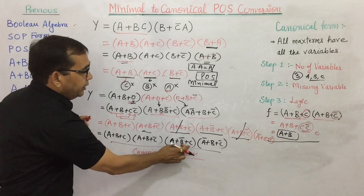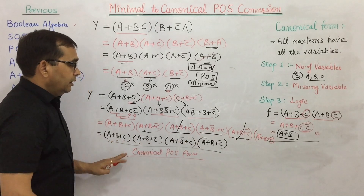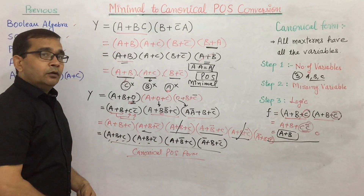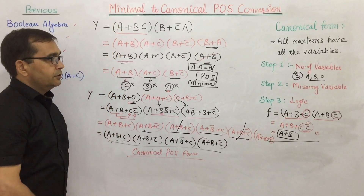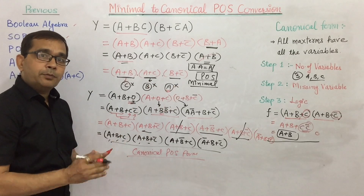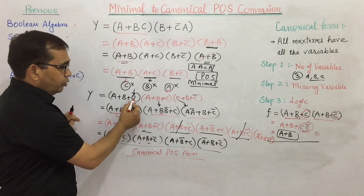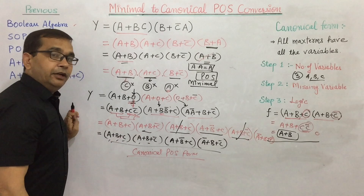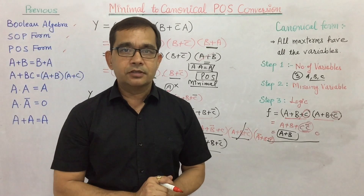This is the final canonical POS form, or standard POS form, because all max terms now have all the variables: A, B, C in each term. In this way we can convert a minimal POS form into a standard POS form. The third step is very important: remember to replace 0 for the missing term, then replace that 0 with the variable multiplied by its complement. That's all for this presentation.